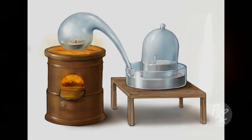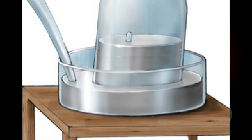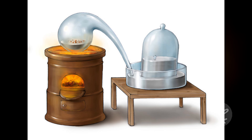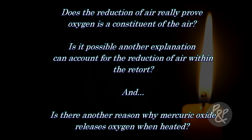Furthering Priestley's work, Lavoisier set to work on his own experiment, which consisted of a glass retort filled with mercury and normal air, sealed by a bell jar placed in a mercury reservoir. After heating the mercury in the retort for several days, red mercuric oxide formed on the mercury surface. The mercury level inside the bell jar rose because of a reduction in the air within the retort. Lavoisier concluded the reduction was due to a certain element of the air being absorbed into the mercury. This experiment helped cement his understanding of oxygen as a constituent of the air. But does this really prove oxygen is a constituent? Could another explanation account for this reduction of air and why mercuric oxide releases oxygen when heated?